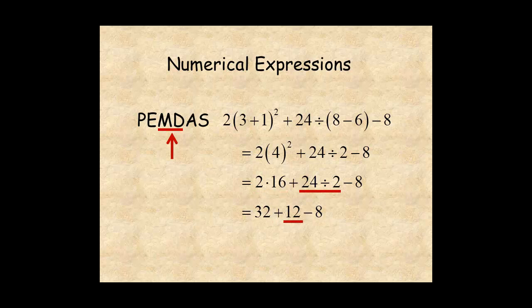Finally, the letters AS mean addition and subtraction. So, in order, 32 plus 12 minus 8 is 36.